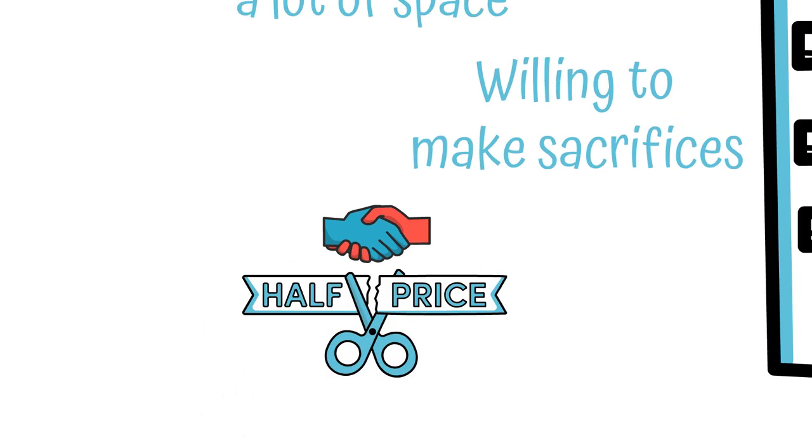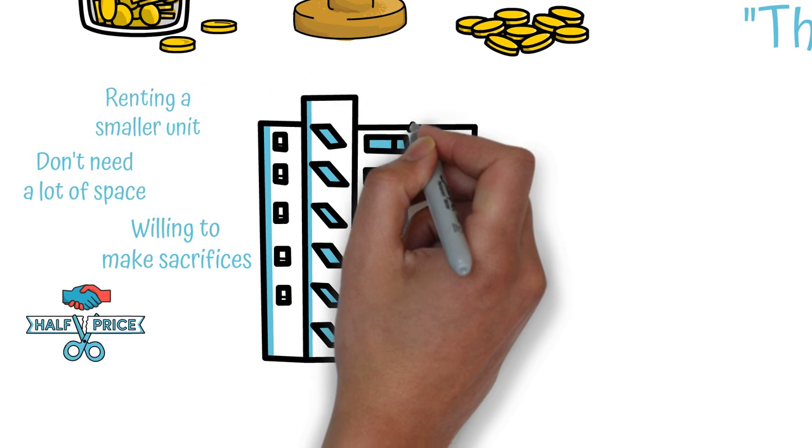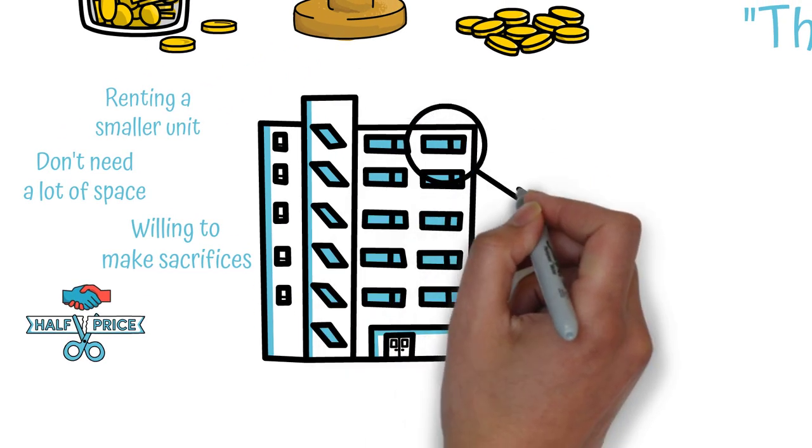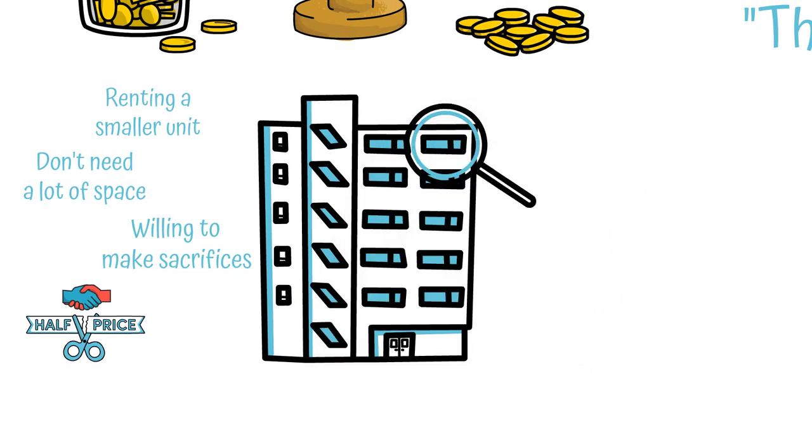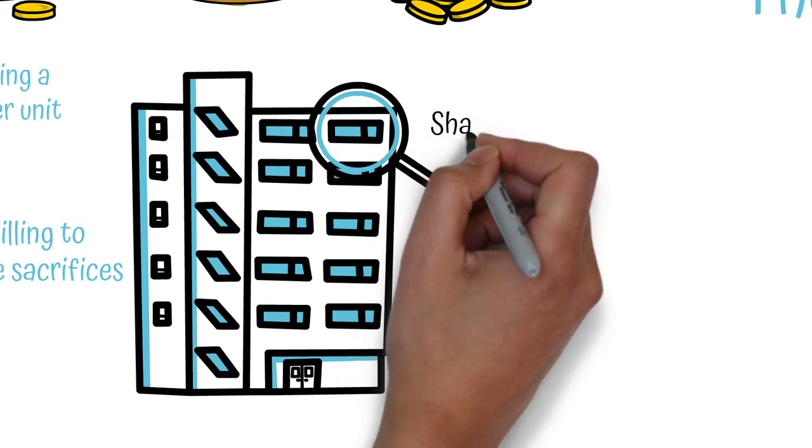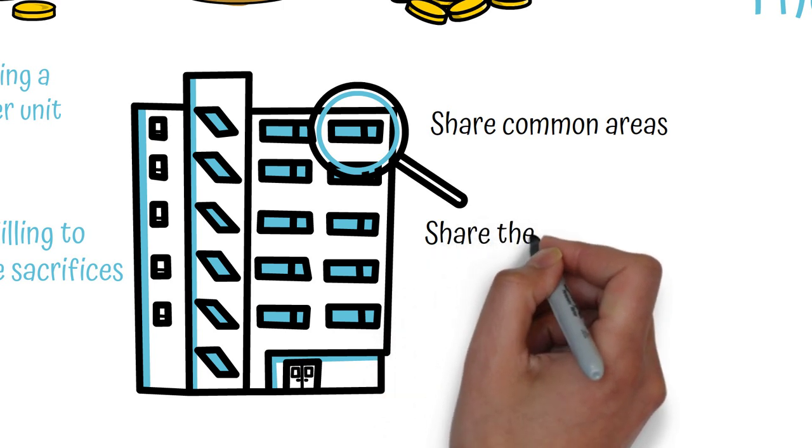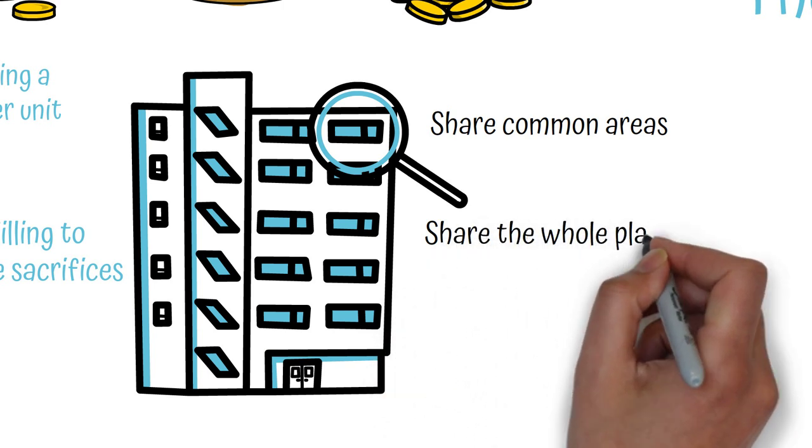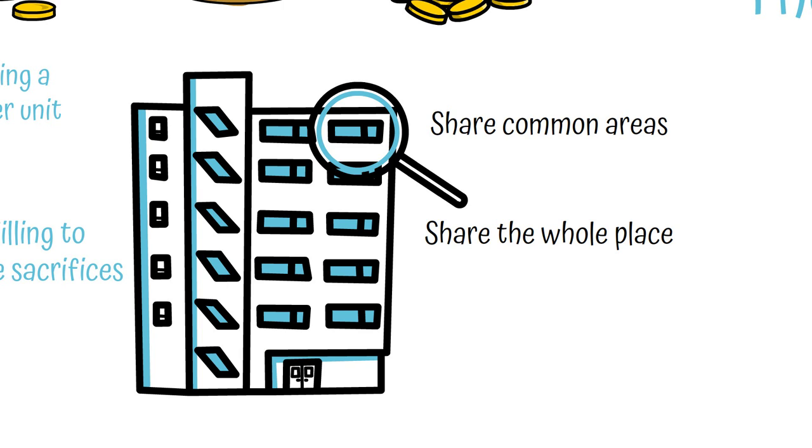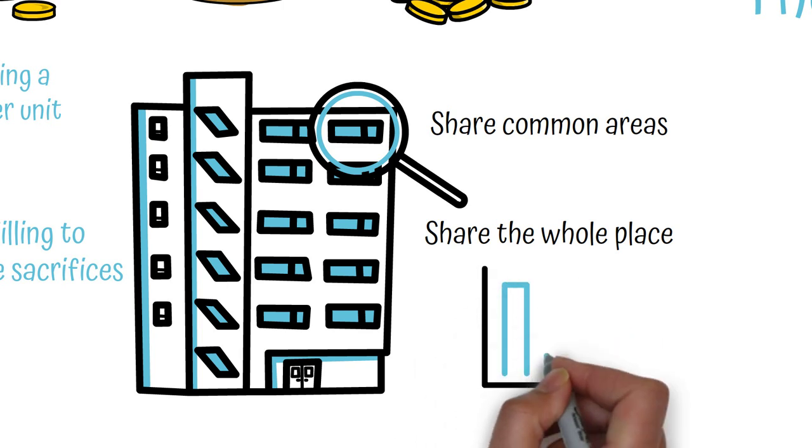Renting a Room in a House or Apartment. Instead of renting an entire unit, you could consider looking for a place that rents out individual rooms. This can be a good option if you are willing to share common areas with other people, such as a kitchen, living room, and bathroom.